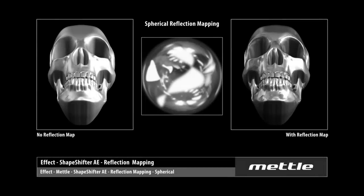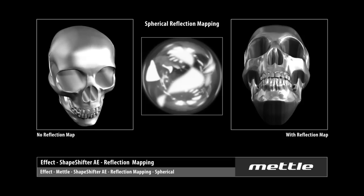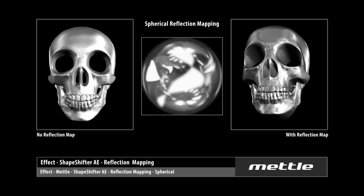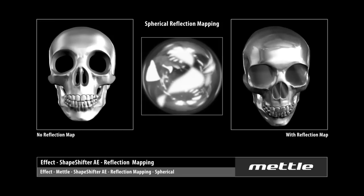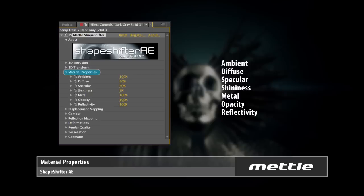We're going to look at our skull again and see the different appearance that it has with and without a reflection map. On the left, you can see that the skull still has many details, but they are mainly light and dark areas from the light source. On the right, the skull is picking up information from the reflection map as well as the light source. This gives the impression that the skull is in an environment with other objects and looks more realistic as a result.